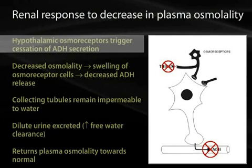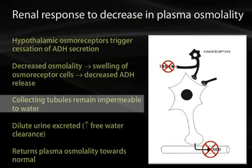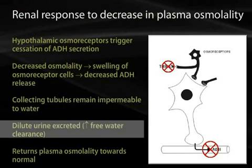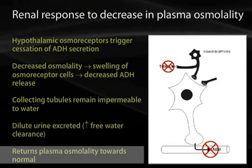On the other hand, if there is a decrease in plasma osmolality, the hypothalamic osmoreceptors sense this and trigger inhibition of further ADH secretion. The collecting duct tubules remain impermeable to water, urea transport is not upregulated, and a more dilute urine is excreted — also known as increased free water clearance — returning plasma osmolality back to the normal range.